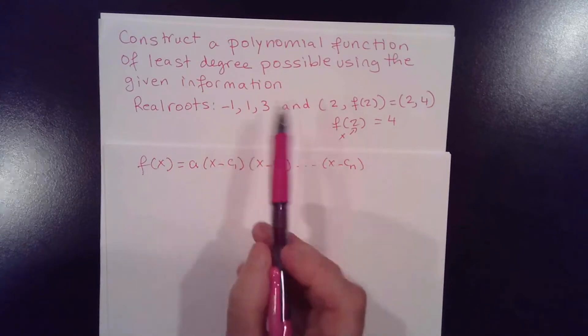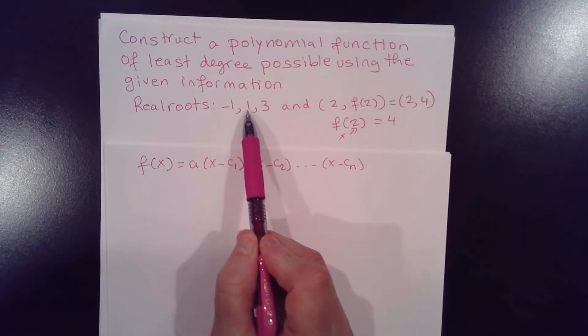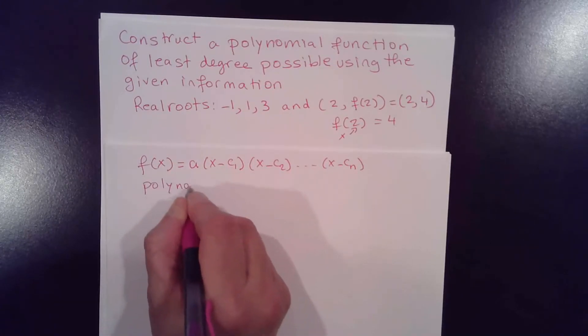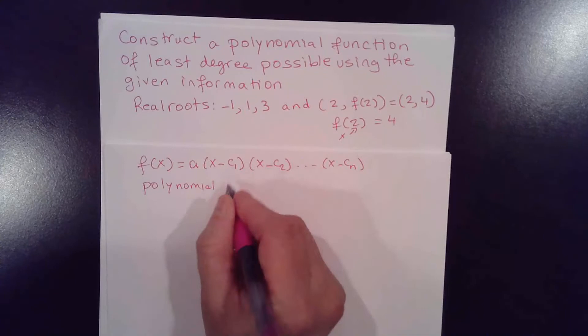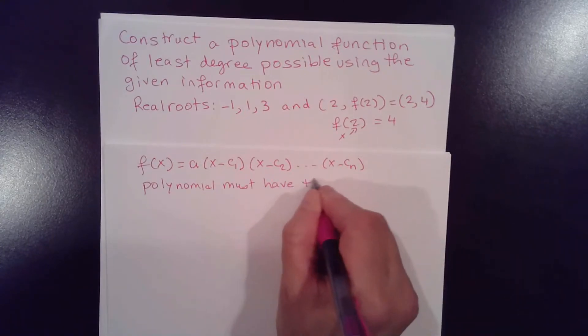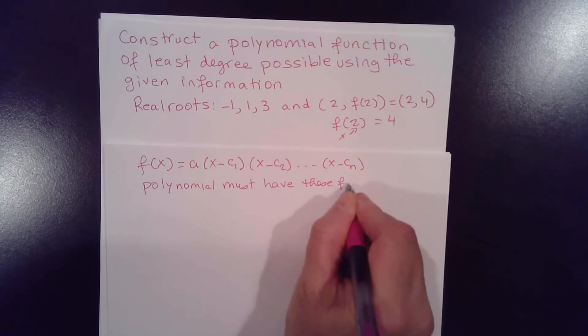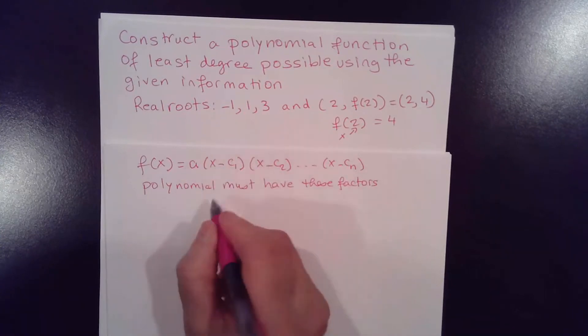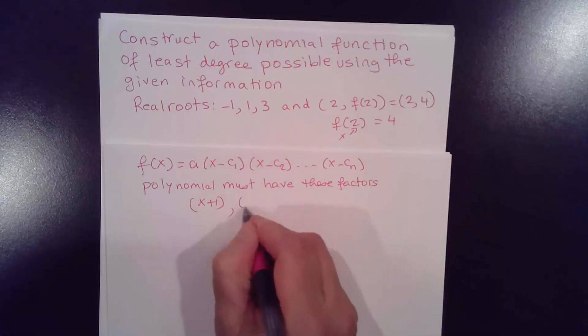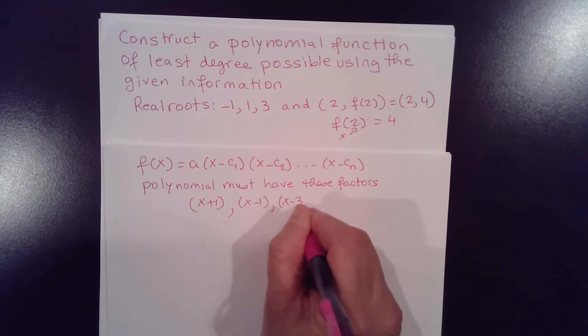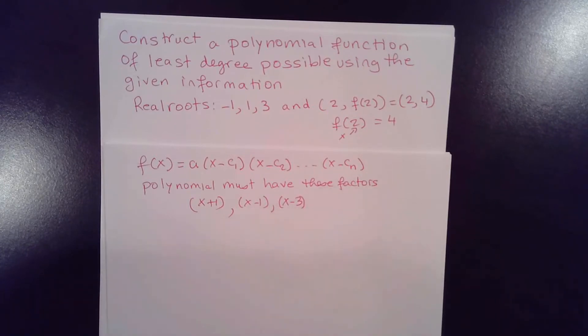So since we have roots of negative 1, 1, and 3, that means the polynomial must have the following factors. So we have x minus negative 1, or x plus 1, that's one factor, x minus 1, and x minus 3. These are the three factors of the polynomial.